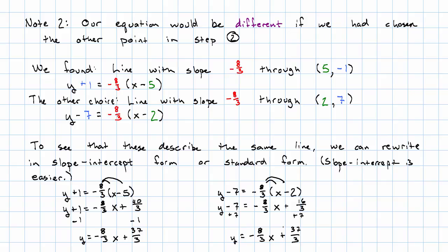So the point-slope forms were different. If we rewrite in slope-intercept form, we get the same answer either way. Now if I ask you for the equation for this line, this is a correct answer, this is a correct answer, this is also a correct answer. You can give your answer in any of those forms that you like.